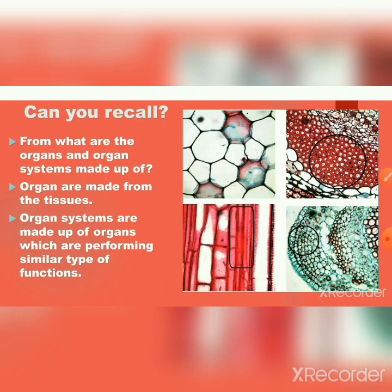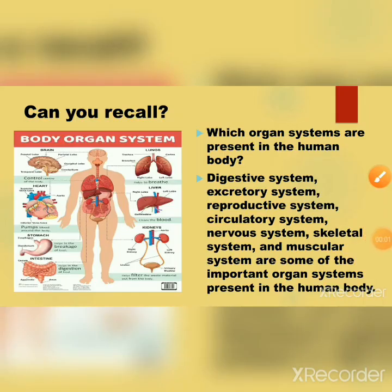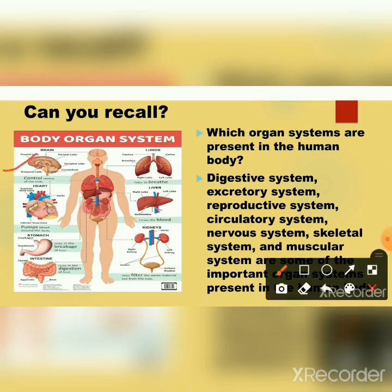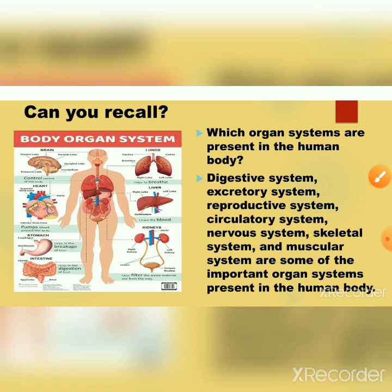The second question is: which organ systems are present in the human body? With the help of a picture, we can see the brain, heart, stomach, intestine, lungs, liver, and kidneys. The important systems are the digestive, excretory, reproductive, circulatory, nervous, skeletal, and muscular systems.